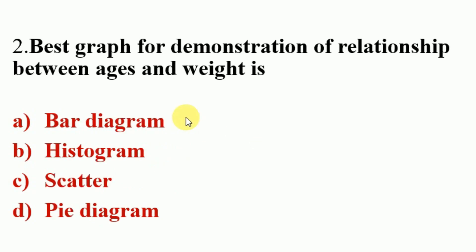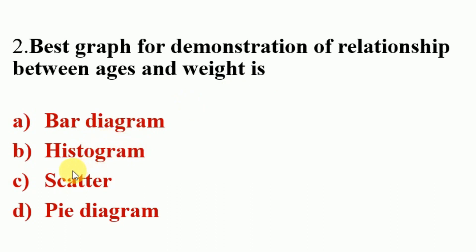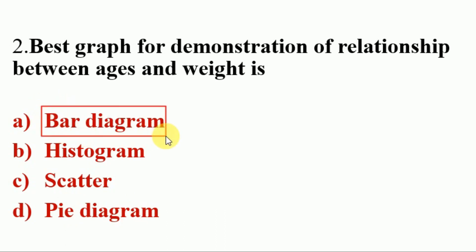Next question. The best graph for demonstration of the relationship between age and weight is — Options A. Bar Diagram, B. Histogram, C. Scatter, D. Pie Diagram. Answer is A. Bar Diagram.